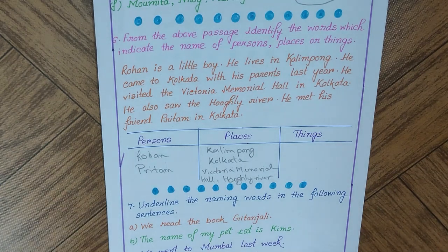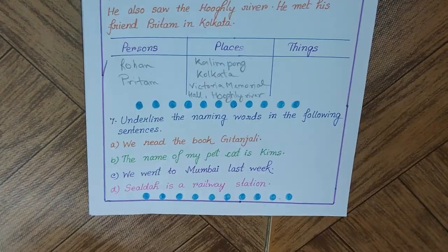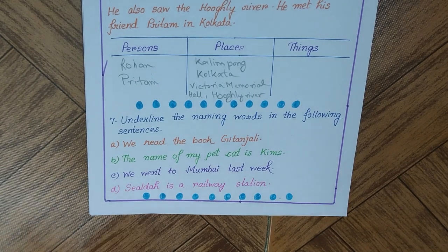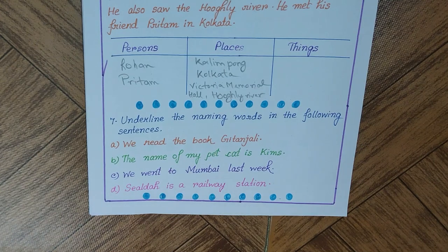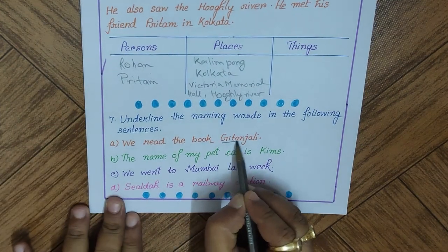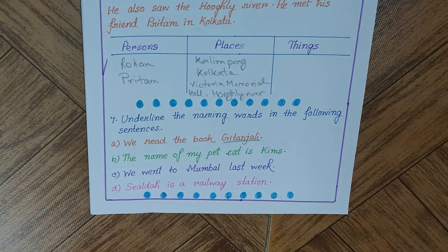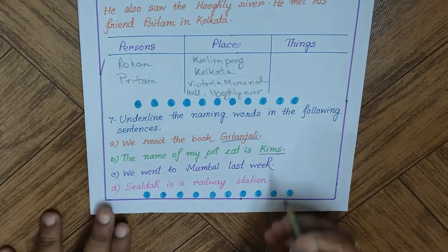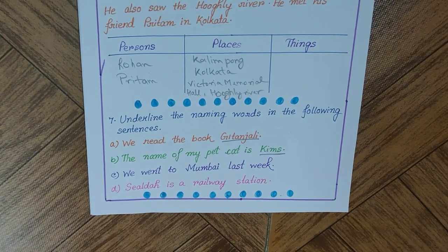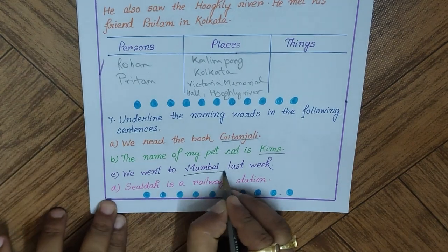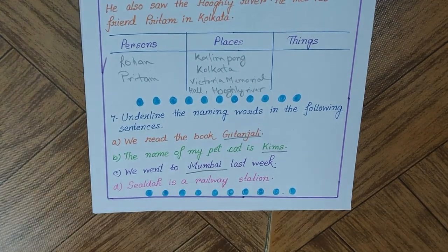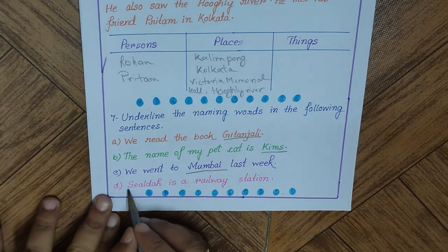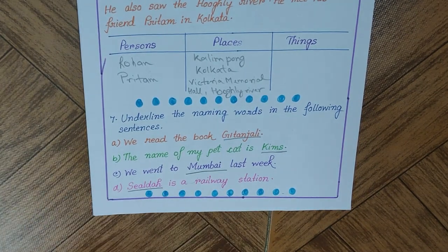Question seven: underline the naming words in the following sentences. (a) 'We read the book Gitanjali' — underline 'Gitanjali.' (b) 'The name of my pet cat is Kim' — underline 'Kim.' (c) 'We went to Mumbai last week' — underline 'Mumbai.' (d) 'Shialda is a railway station' — underline 'Shialda.' Question seven is complete.